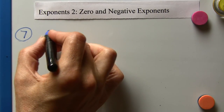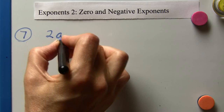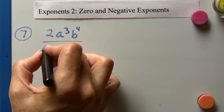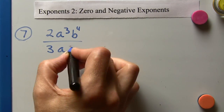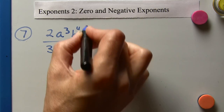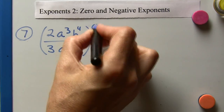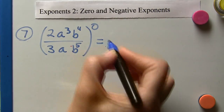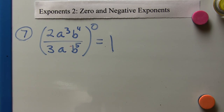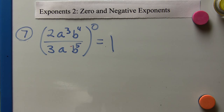Two a cubed b to the fourth over three a to the first b to the fifth, raised to the zero. Anything raised to the zero is just one. It doesn't matter what you're raising to the zero — as long as it doesn't equal zero itself, the answer is one.